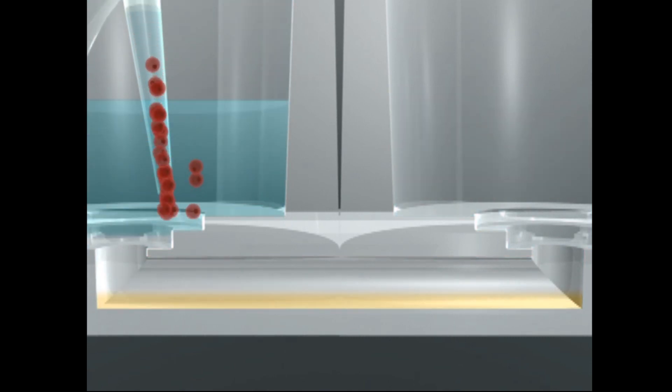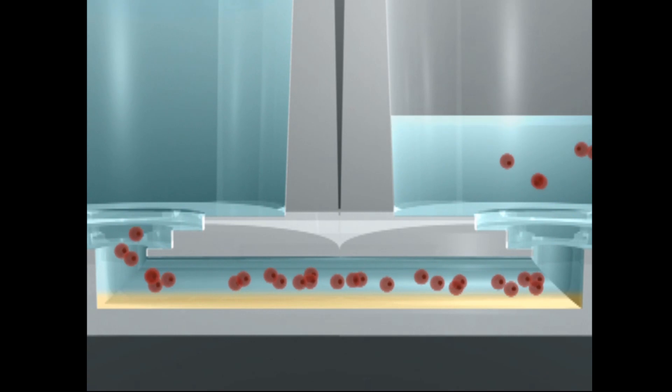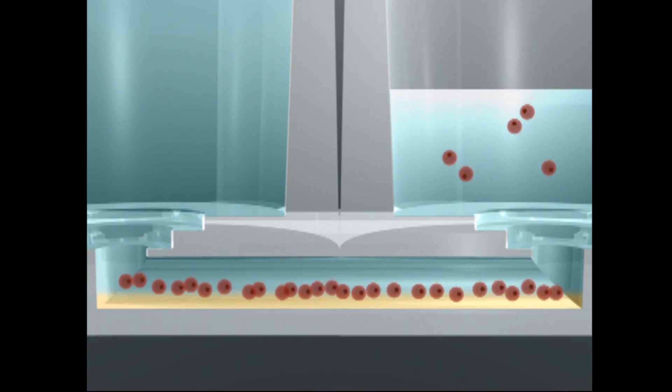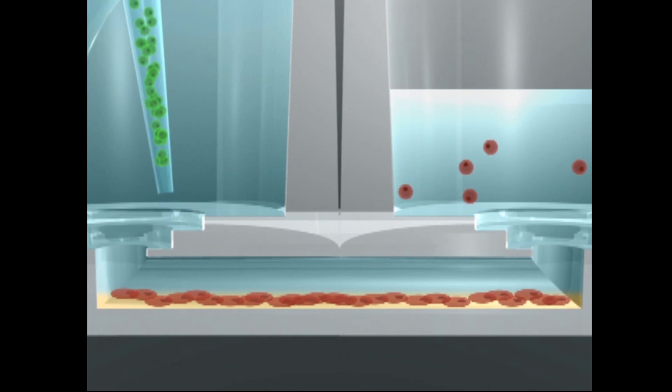Cellular monolayers can be formed on the bottom surface to perform cellular interaction studies. Cells in suspension are introduced into the channel and allowed to settle. The cells are allowed to attach and form a tight monolayer under controlled temperature and environmental conditions. At this point, additional circulating cells can be added into the chamber under controlled shear flow.